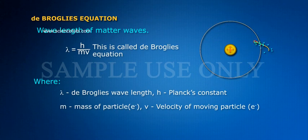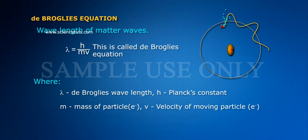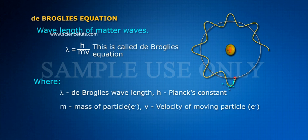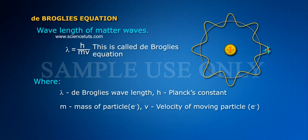Wavelength of Matter Waves: Lambda is equal to H by MV. This is called de Broglie Equation. Where Lambda is de Broglie's Wavelength, H is Planck's Constant, M is Mass of Particle or Electron, and V is Velocity of Moving Particle or Electron.